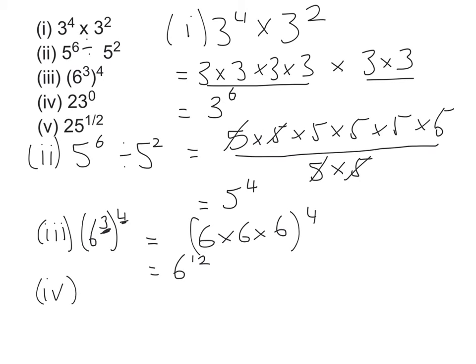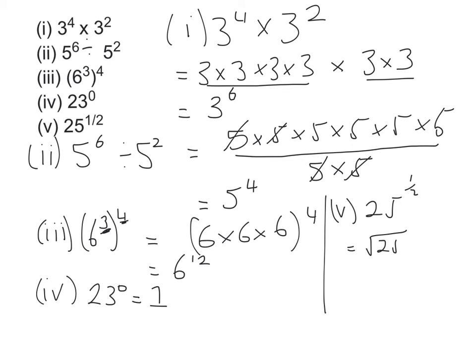The next question is really straightforward: 23 to the power of 0. There's a rule that any number — regardless if it's 12, 100, or a million — to the power of 0 will always give you 1. The next question is 25 to the power of a half. That's just a slightly different way of writing the square root of 25. The square root of 25 is what number multiplied by itself twice gives 25, and the answer is 5.